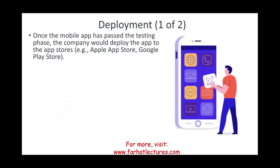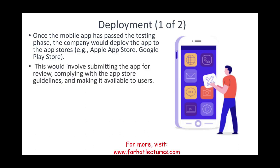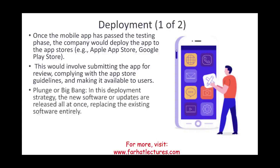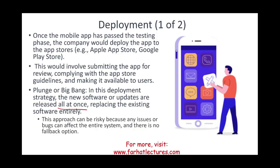After testing, we're ready to deploy. Once the mobile app passes testing, the company deploys it to the app store, Google Play store, or Microsoft store — submitting the app for review, complying with guidelines, and making it available to users. One deployment method is a plunge or big bang deployment, where software is released all at once, replacing the existing software entirely. This can be risky because any issues affect the whole system and there's no fallback option.